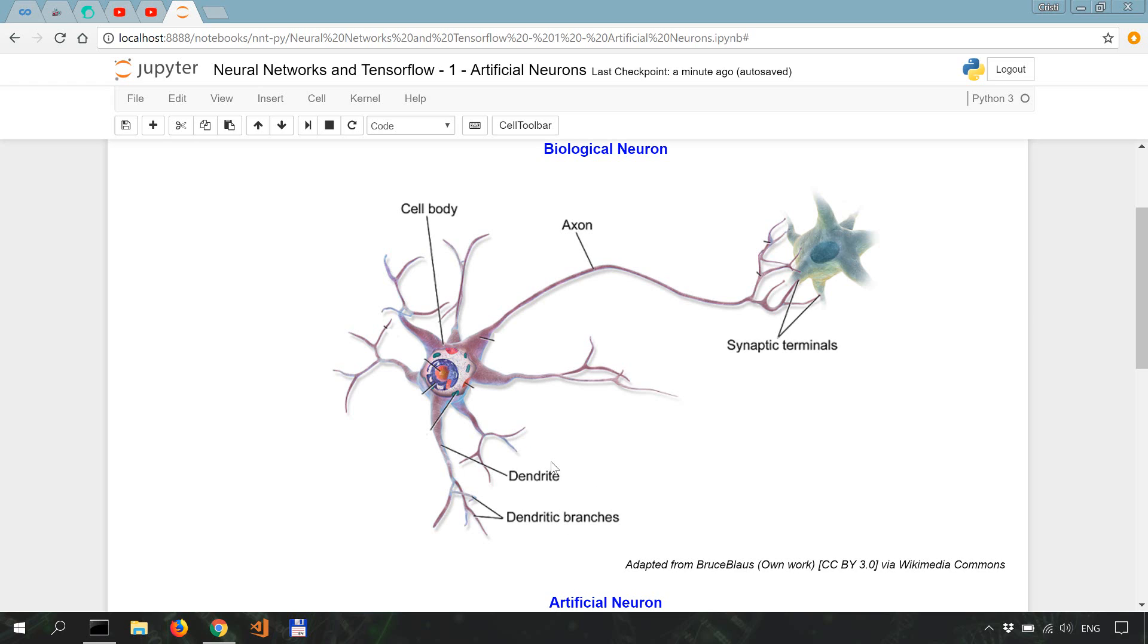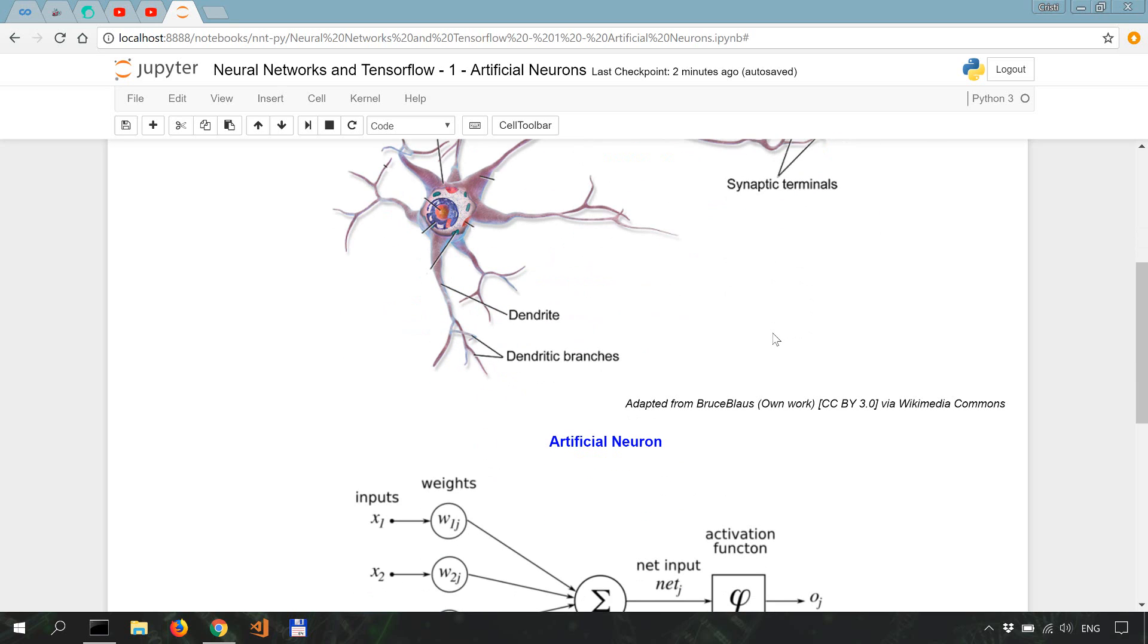These signals can be stronger or weaker depending on how often they are used. The signals converge into the cell body, which transforms and sends them along the axon to the synaptic terminal towards other neurons. Now in artificial neurons, we have inputs much like these dendrites.